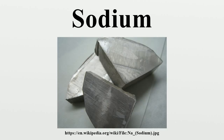Sodium ions are pumped out of cells by the Na+/K+-ATPase in exchange for potassium. It pumps three sodium ions out of the cell for every two potassium ions pumped in, contributing to the fact that about 40 times as much potassium is inside cells compared to outside, and about 10 times as much sodium is outside cells compared to inside in nerve cells. A buildup of electrical charge across the cell membrane allows transmission of a nerve impulse — an action potential — when the charge is dissipated.